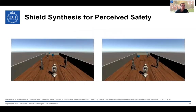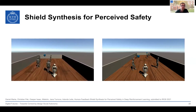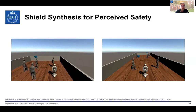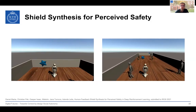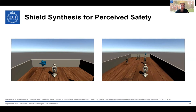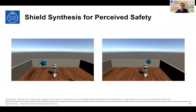In their experiments, they simulated a social navigation task among humans. The non-shielded version — not taking into account perceived safety — shows the robot moving very close to humans. The shielded version with perceived safety, on the right, shows the robot taking more time and waiting until humans are far enough away before passing.